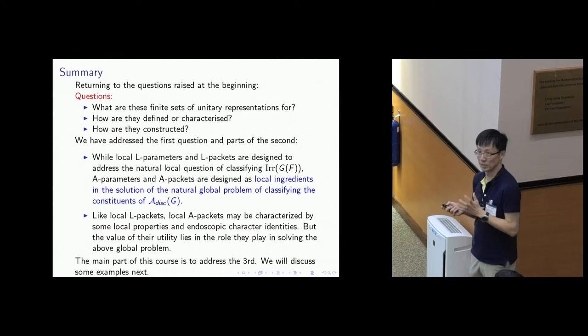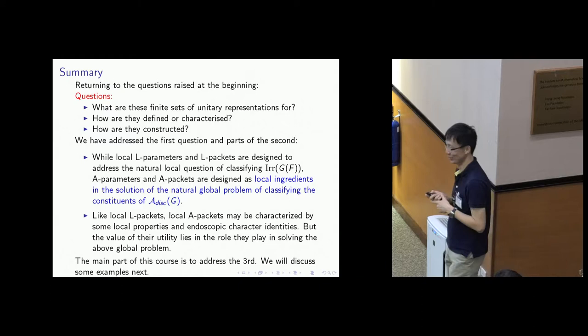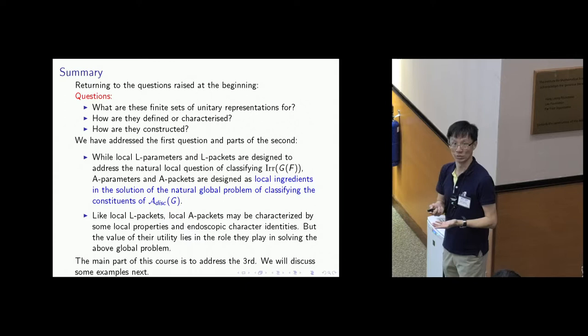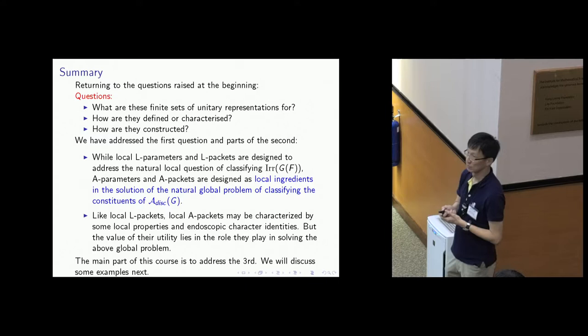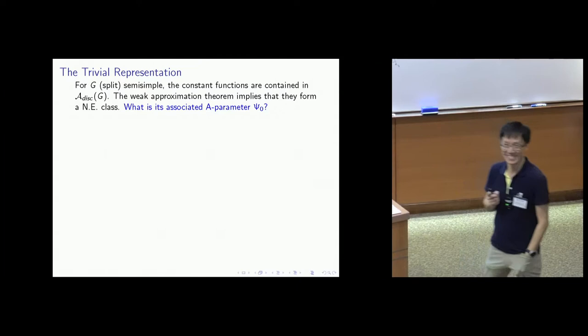For the second question: just like local L-packets, local A-packets may be characterized by some local properties and endoscopic character identities. The utility lies in the role they play in solving the above global problem. But the fact that they could be characterized purely locally certainly raises a question: independent of the global problem, do they have any significance? Because they start off as trying to solve a global problem, but after you produce them, you realize they can be characterized purely locally. That seems to suggest they have some purely local significance even in the absence of the global problem. Maybe in the later lectures of this course, when we discuss some of the constructions of local A-packets, you may find some answer to that question. In particular, in the last two lectures, I think Hiraku is going to discuss a certain geometric construction of local A-packets — a conjectural geometric construction — and you might view that as saying that even without the global problem, it is natural to consider these local A-packets because they arise in some geometric context.